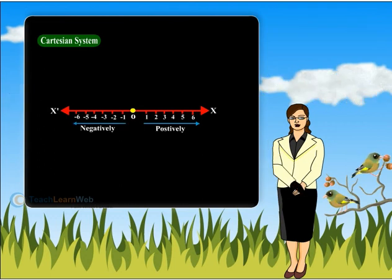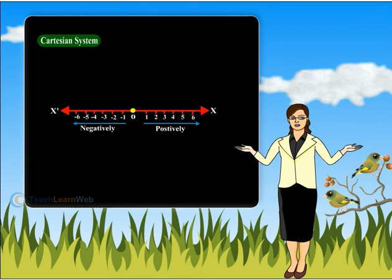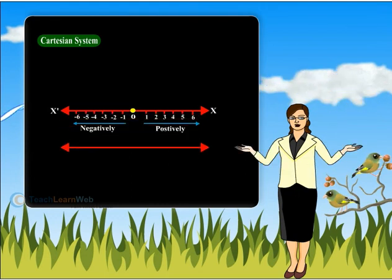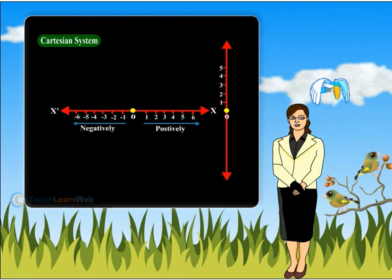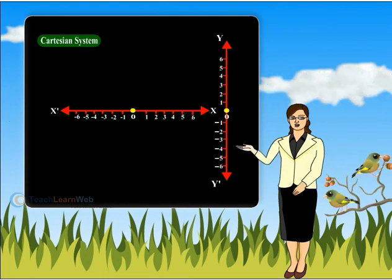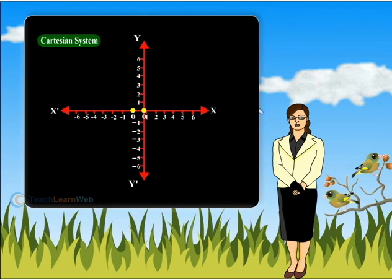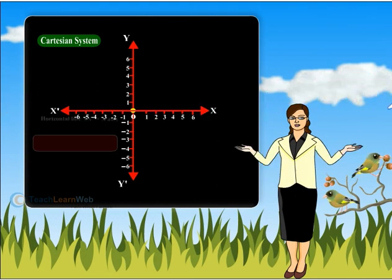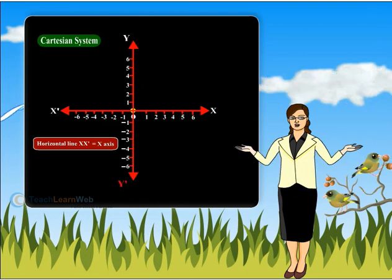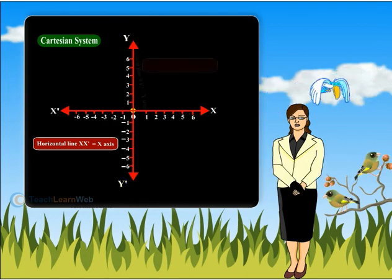René Descartes invented the idea of placing two such lines perpendicular to each other such that the two lines cross each other at their origins. The horizontal line, x-x', is called the x-axis. The vertical line, y-y', is called the y-axis.